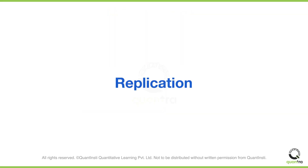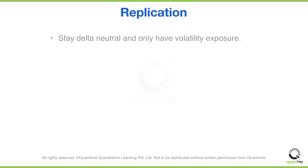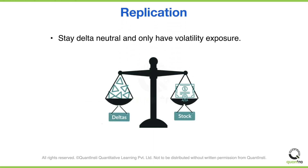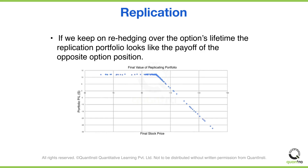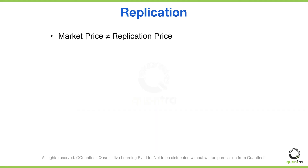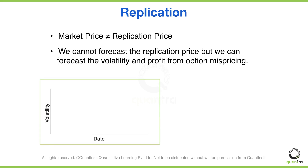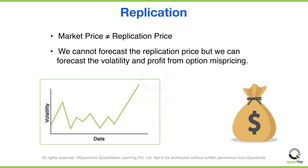Now let's talk about replication, rebalancing, or dynamic hedging. This is the process that lets us stay delta neutral and only have volatility exposure. Direction is a risk; volatility is where we will find an edge. When we hedge, we interact with the stock, which moves according to the realized volatility. If we do this over the option's lifetime, we will have a stock portfolio whose value is the same as the option if it was priced at the underlying volatility. The replication trades will cancel out the option, no matter the final value of the stock. But often, the market price will be different to this replication price. We won't know the replication price in advance, but if we can forecast volatility, we look for situations where the options are mispriced according to our forecast. Then we trade the option, hedge and profit. This idea is very important to us, and we'll come back to it later in the course.